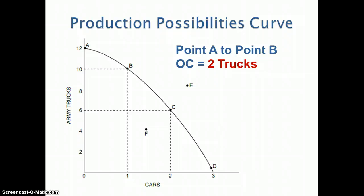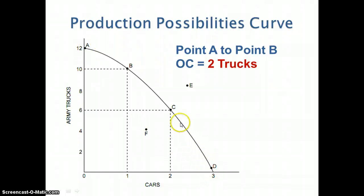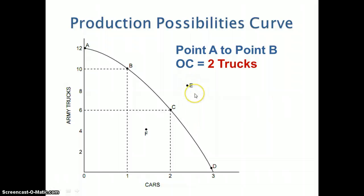When we look at a production possibilities curve, we can identify opportunity cost and put a number on it. In this example, we've got two products: army trucks or cars. The production possibilities curve shows all possible combinations of trucks and cars that can be produced. We could make 12 trucks and no cars, or three cars and no trucks, or any combination between. Point E is not attainable without economic growth, whereas point F is something we could make but it's inefficient because we could be making more of both cars and trucks.